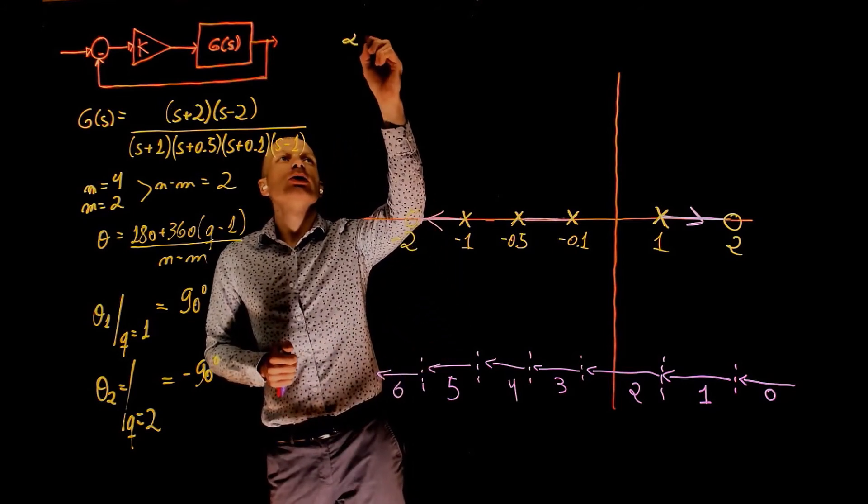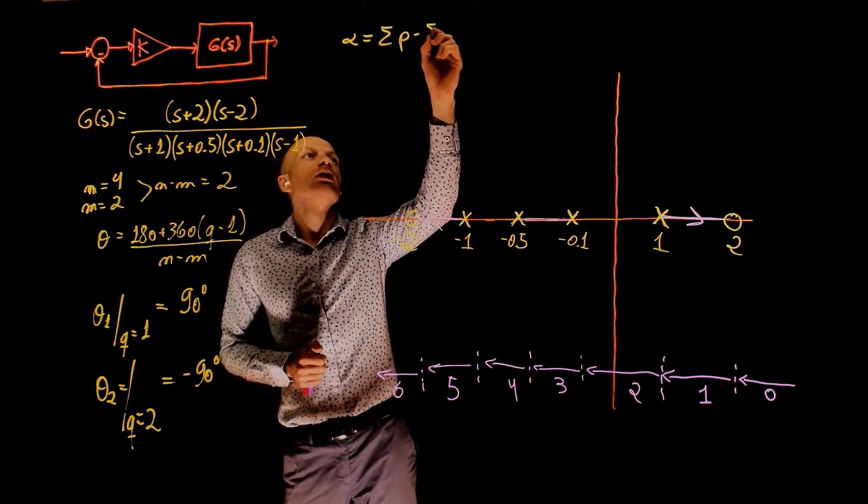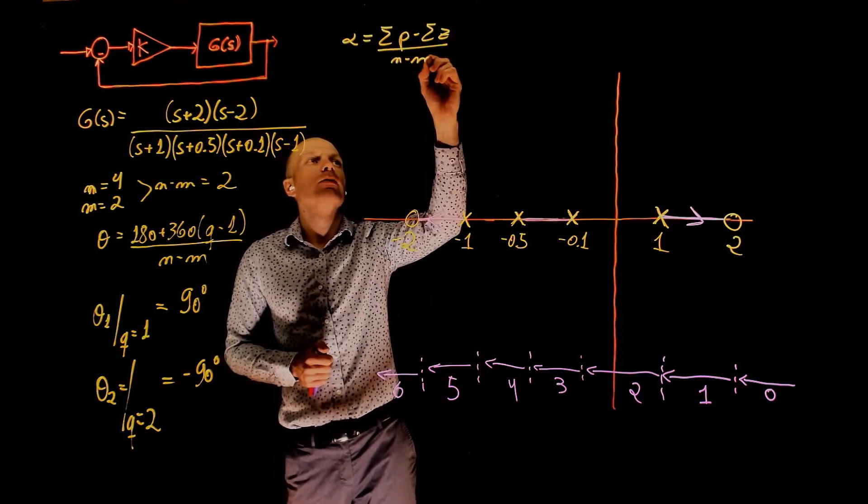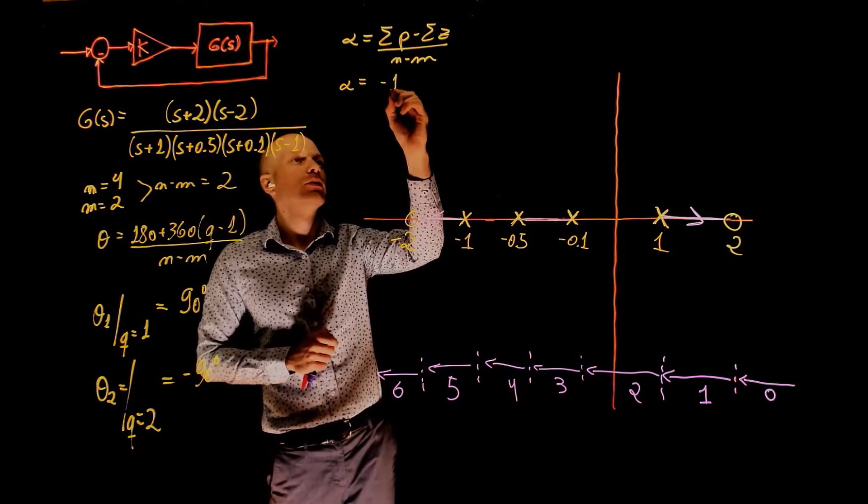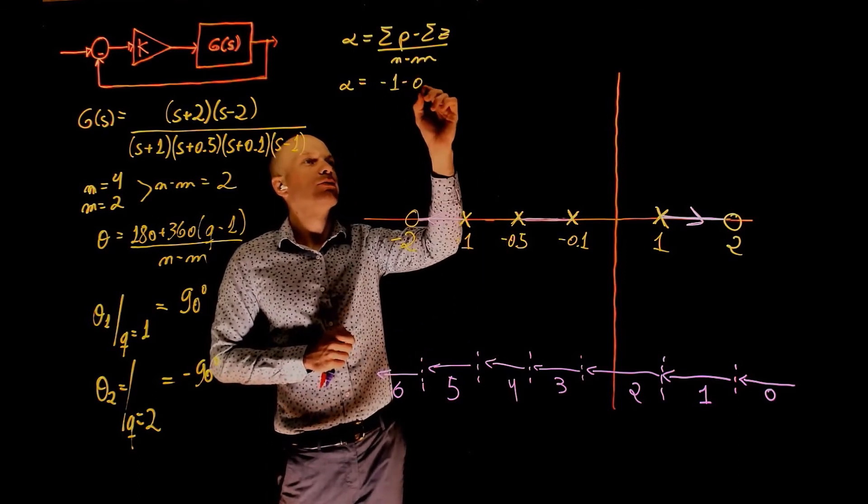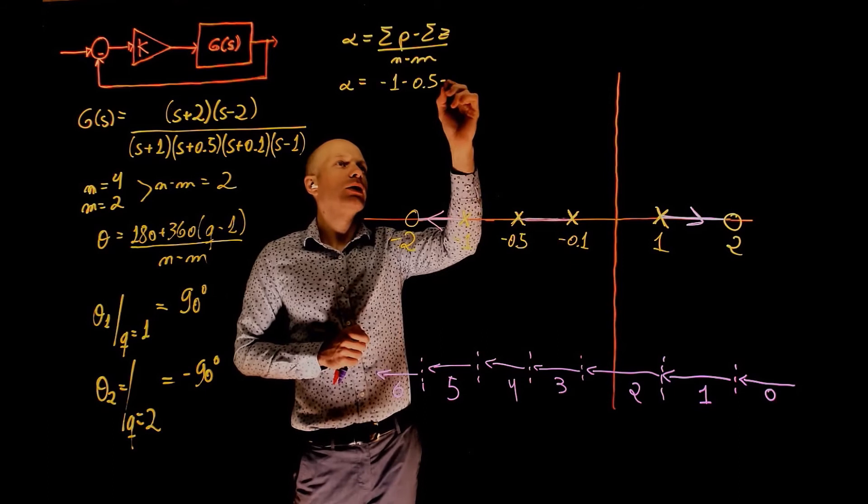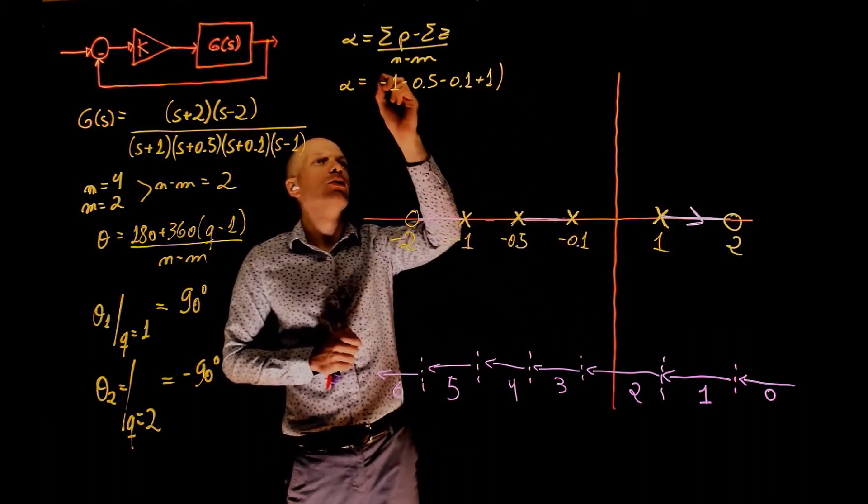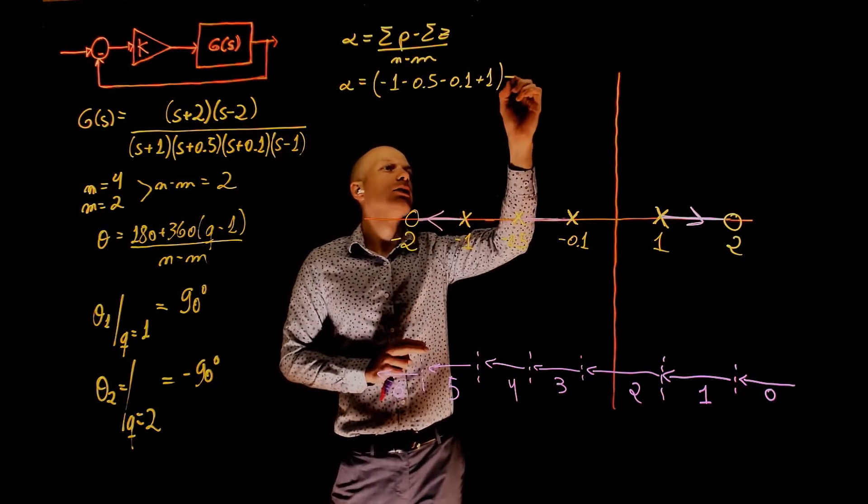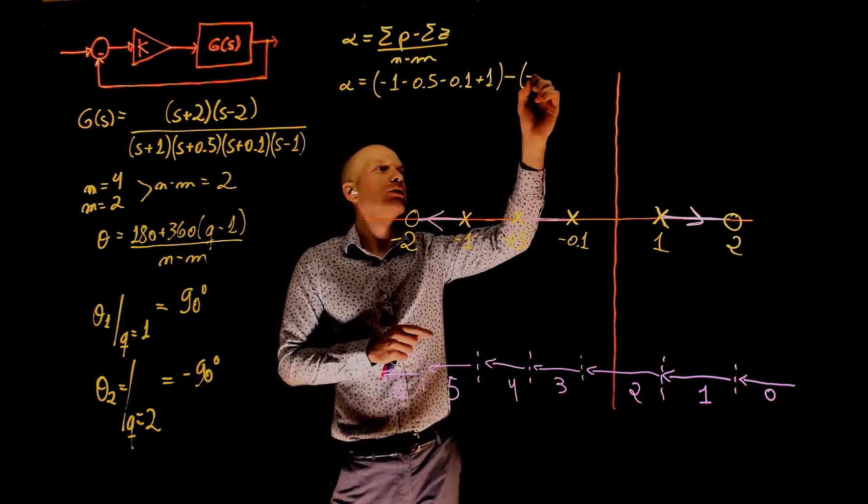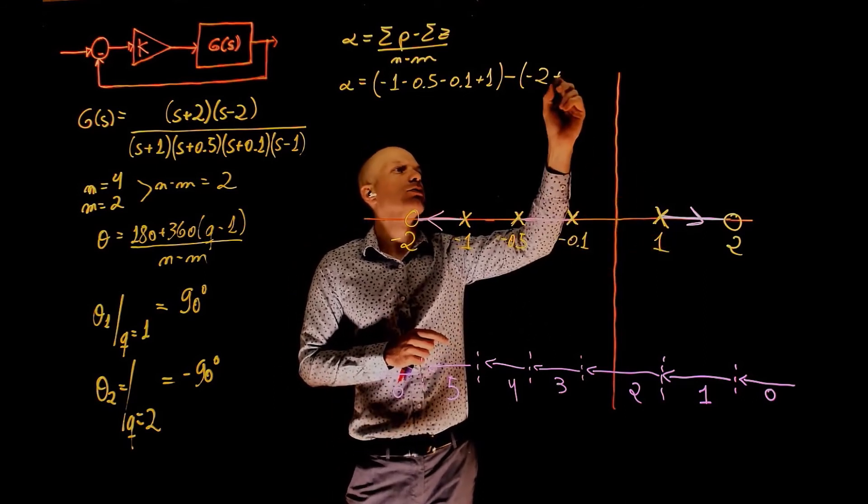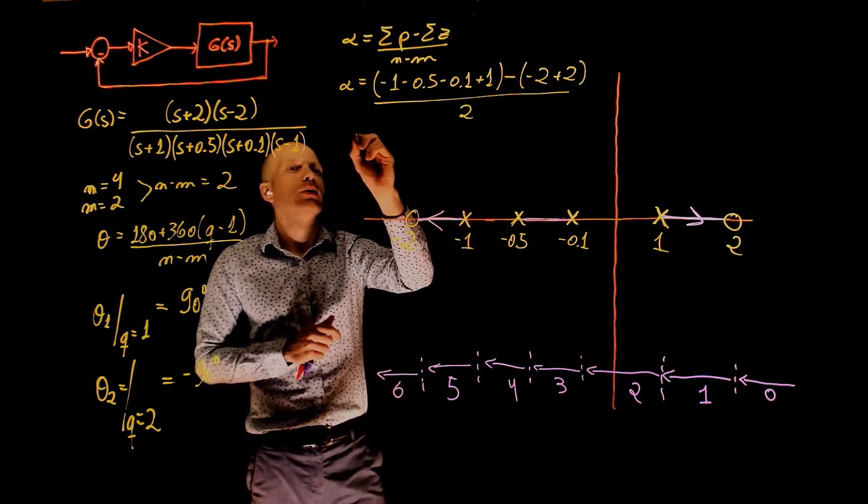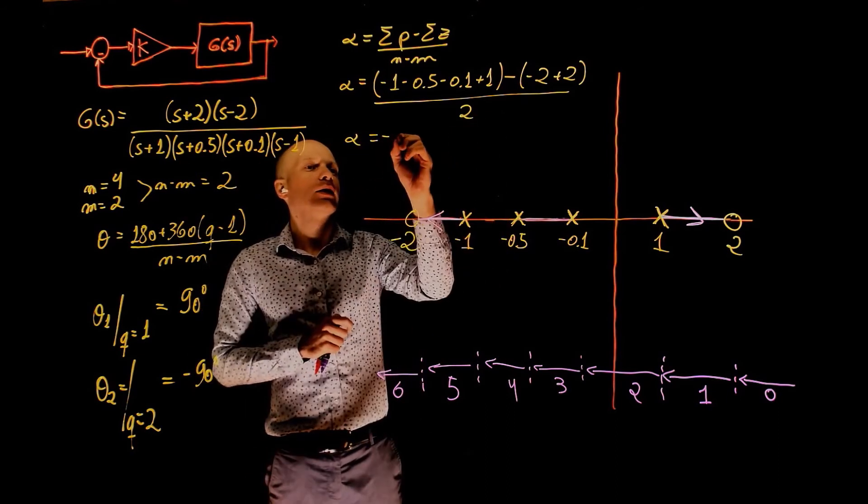This asymptote's centroid is calculated as the sum of poles minus the sum of zeros divided by n minus m. And this is sum of all poles: negative 1, negative 0.5, negative 0.1, plus 1. So this is all poles minus all zeros: negative 2 plus 2. And this is divided by n minus m, which is in this case 2. Alpha is negative 0.3.